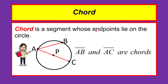A chord is a segment whose endpoints lie on the circle. We have segment A-B. The endpoints of segment A-B are point A and point B, and both points lie on the circle. We also have segment A-C, whose endpoints A and C also lie on the circle. If the two endpoints of the segment lie on the circle, we can consider that segment as a chord.